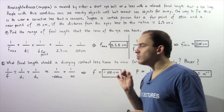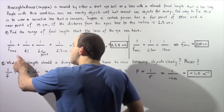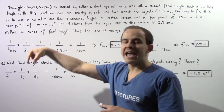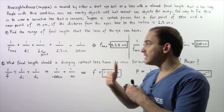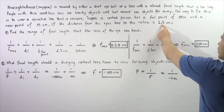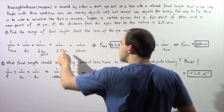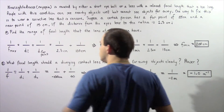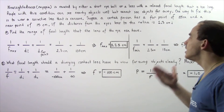We apply the thin lens equation. The lens of the eye is a convex thin lens. To find the maximum focal length, we place the object exactly at the far point, so the object distance is 100 centimeters, while the image distance is 2.3 centimeters — the distance from the lens of the eye to the retina. So: 1/2.3 cm + 1/100 cm = 1/f_max. Solving this gives a maximum focal length of about 2.25 centimeters.